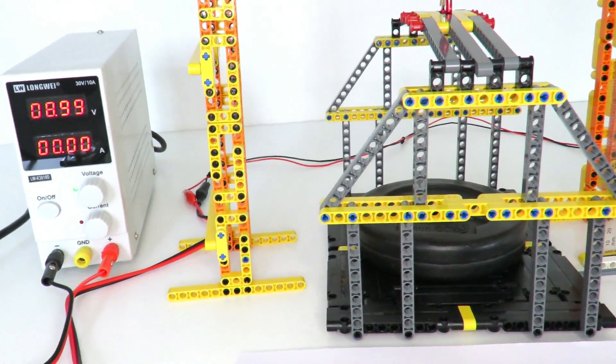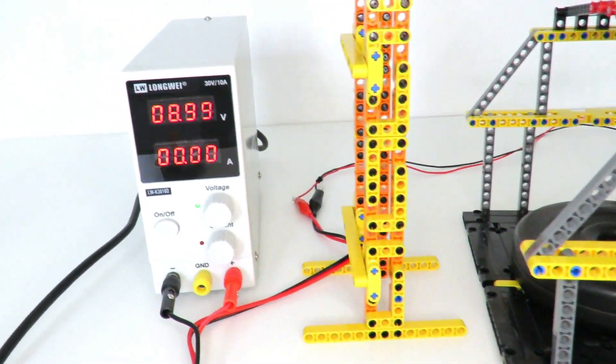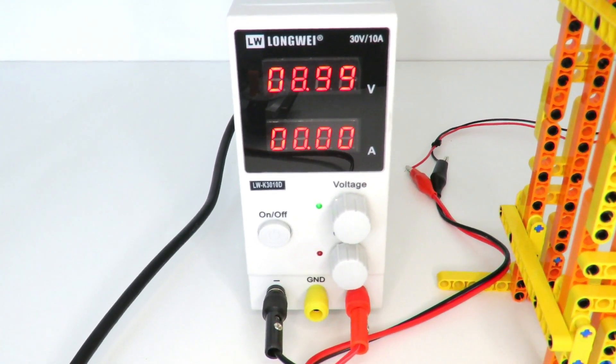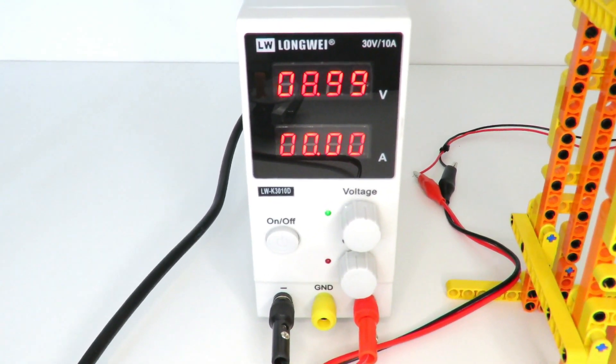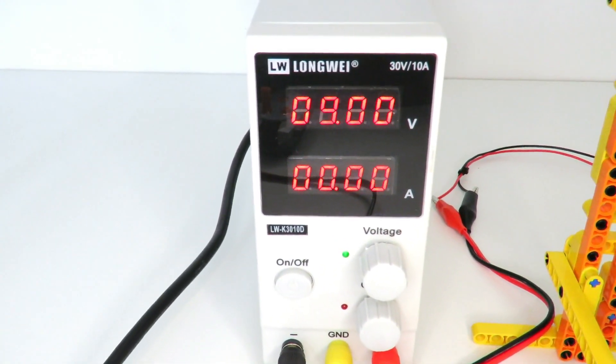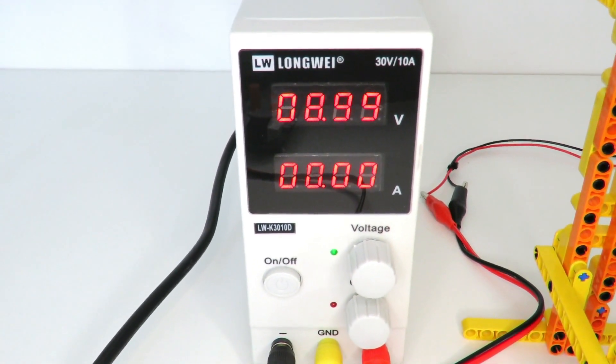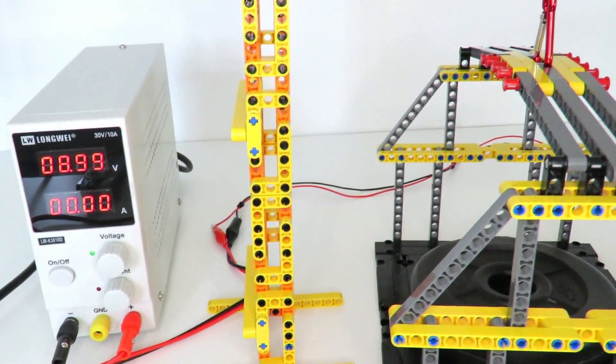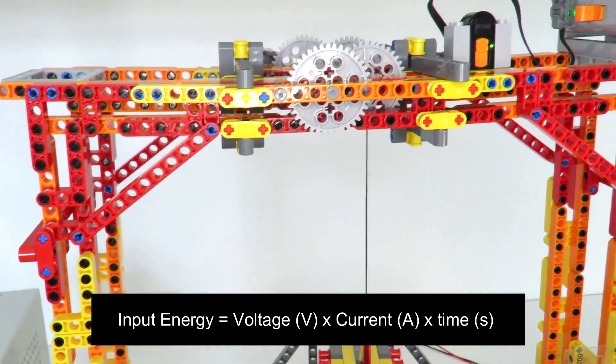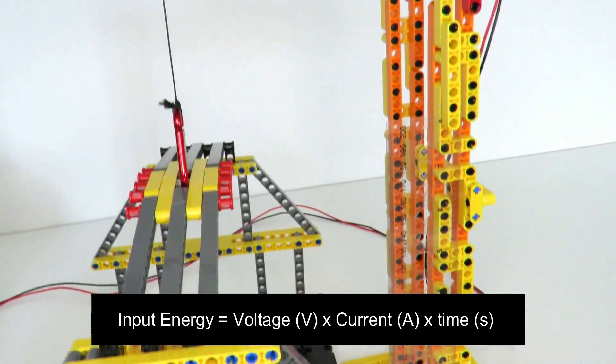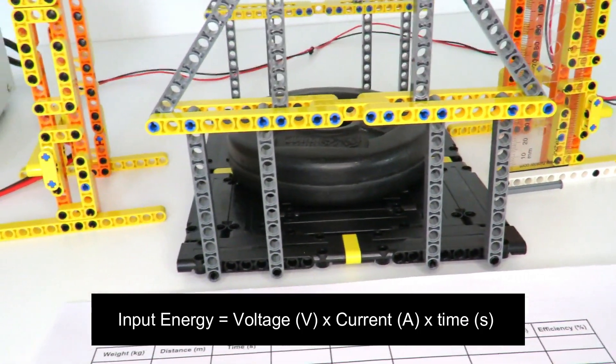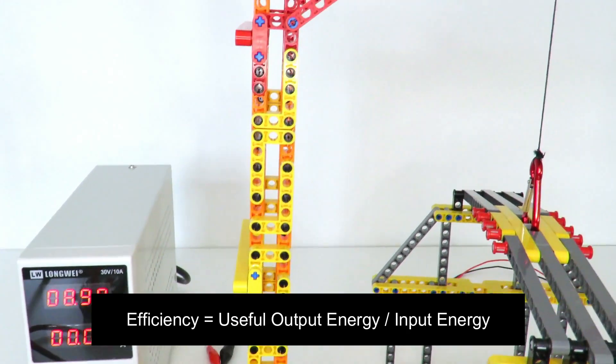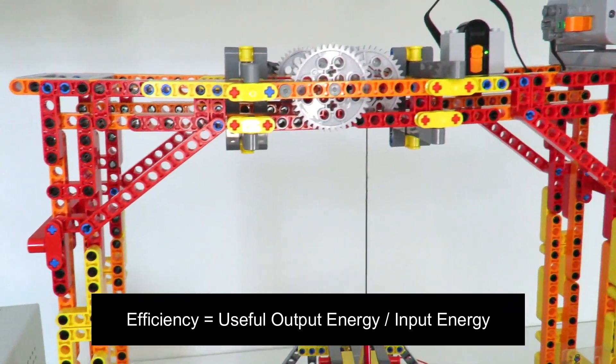In order to work out the amount of input energy into the system, we just need to look at the power being supplied by the power supply. In order to work out the power in the case of a DC supply, we simply multiply the voltage by the current to work out the power being used. Now to work out the overall energy, we need to multiply that power by the amount of time over which the crane is operating to give us the energy that was put into the system. Then the overall efficiency is simply the ratio of the output energy to the input energy, which of course will be a number below 100%.